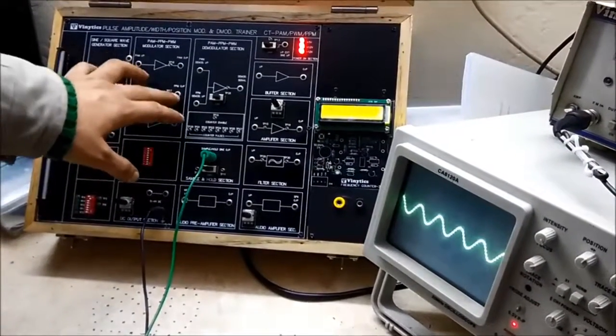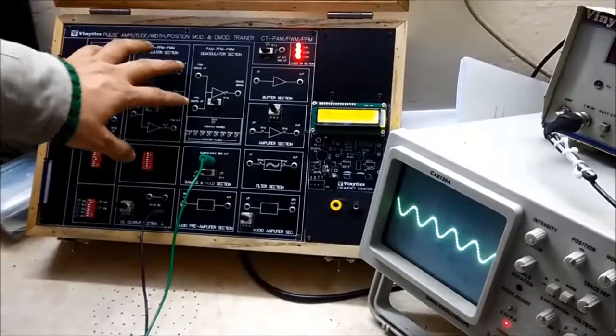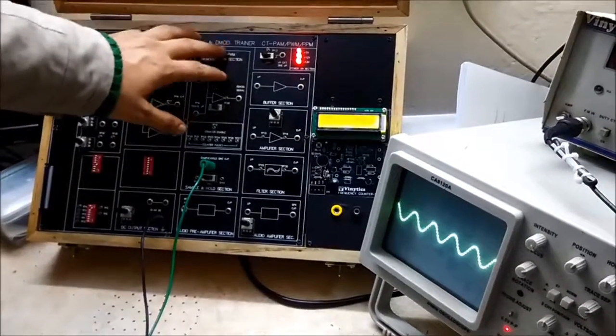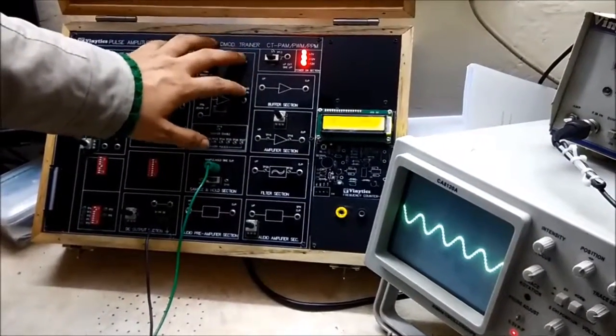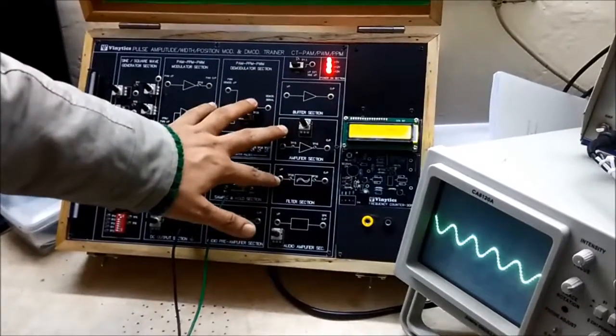The output of which will be given to our buffer section. The output of buffer will be given to PPM or PWM with respect to our experiment. And the demodulated signal will be given to the amplifier section and the amplifier section will be given to our filter section.